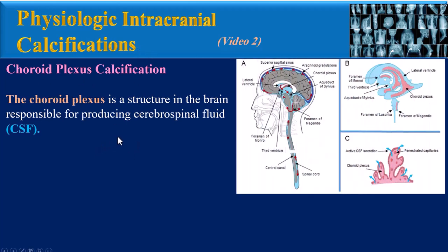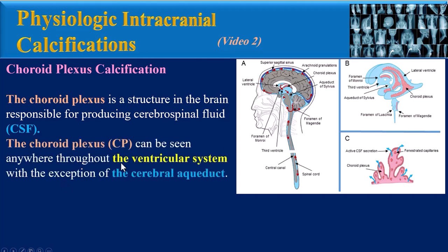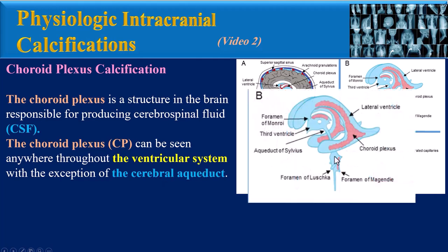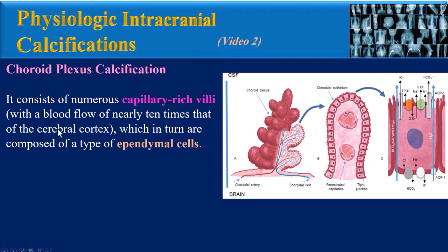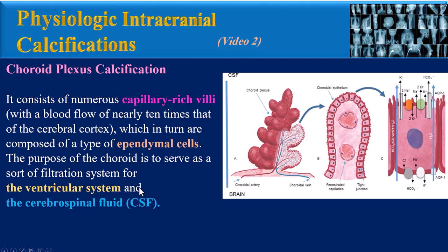The choroid plexus is responsible for producing cerebrospinal fluid and can be seen anywhere throughout the ventricular system, with the exception of the cerebral aqueduct. It consists of numerous capillary-rich villi with a blood flow of nearly 10 times that of the cerebral cortex, which in turn are composed of a type of ependymal cells. The purpose of the choroid is to serve as a sort of filtration system.